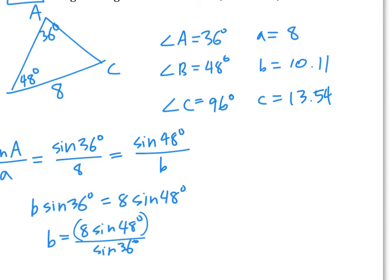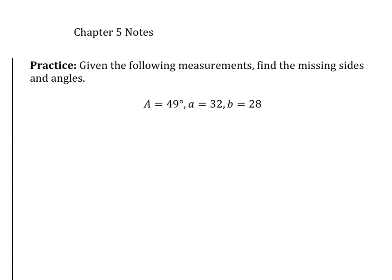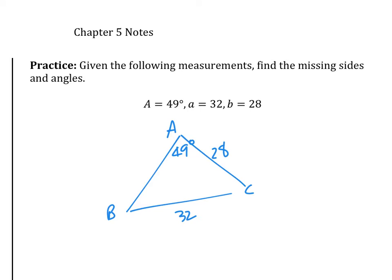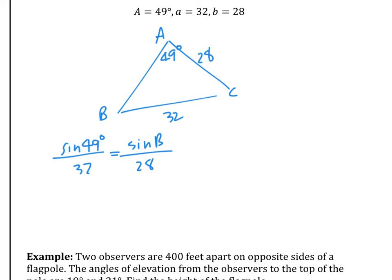Let's try one more — find the missing sides and angles. If you're trying to find angle B with a equals 32, angle A equals 49 degrees, and b equals 28, you use the ratio: sine 49 over 32 equals sine B over 28. Cross-multiplying gives: 28 sine 49 equals 32 sine B.